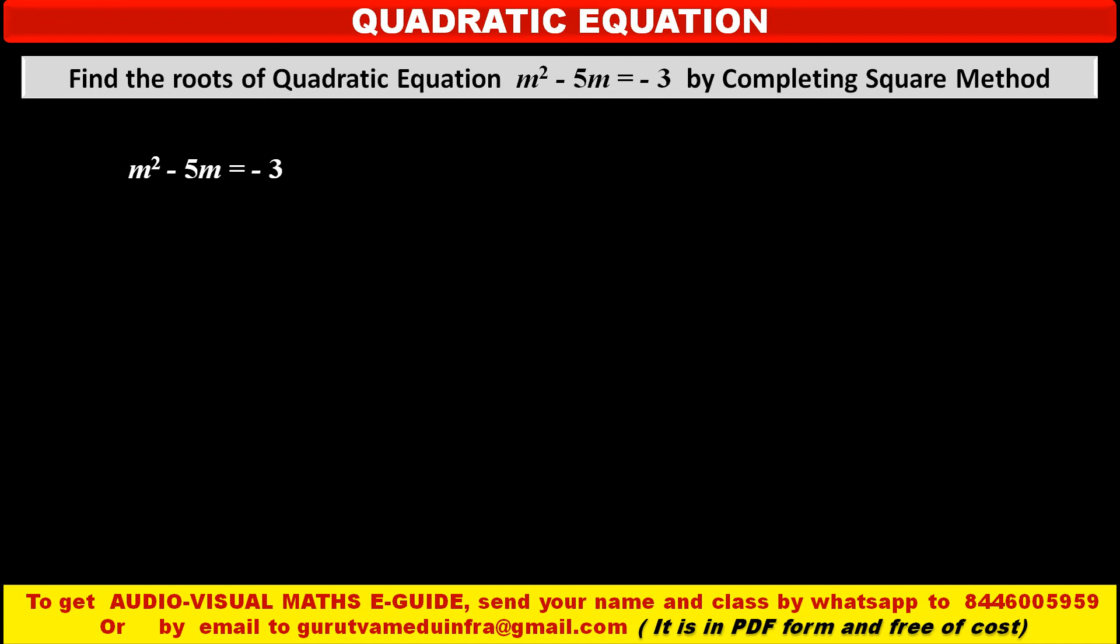The given quadratic equation is m square minus 5m is equal to minus 3. Now we have to solve this equation by using completing square method.